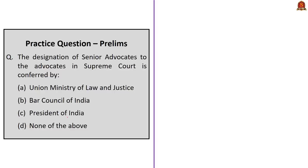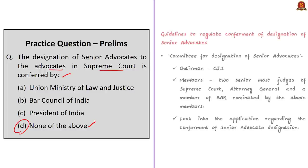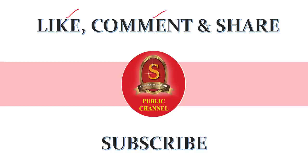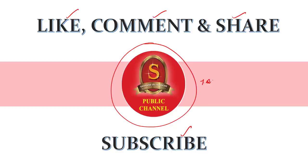The final practice question is about senior advocates. The question asks who confers the designation of senior advocates in the Supreme Court. The correct answer is option D — none of the above — as it is based on the Committee for Designation of Senior Advocates. With this, we come to the end of the analysis of all news articles and the practice questions discussion session. If you like the video, press the like button, comment, share, and subscribe to Shankar IAS Academy YouTube channel for the latest videos and updates. Stay focused and motivated. Thank you.